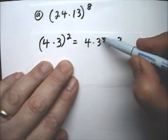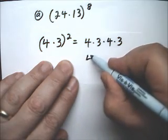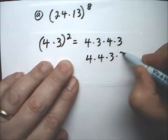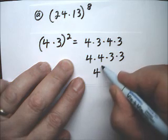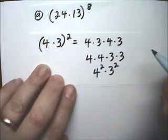Now, multiplication has the commutative property, and I can switch these two in the middle. So now that I switch them, you can see that what I really end up with here is 4 to the second power times 3 to the second power.